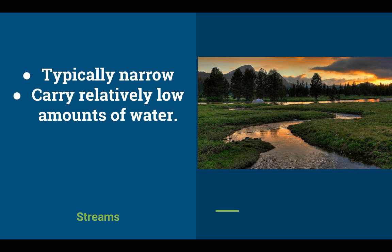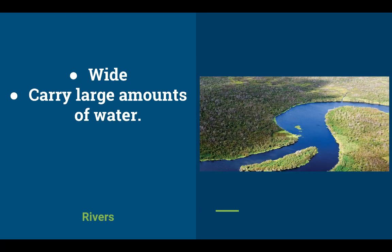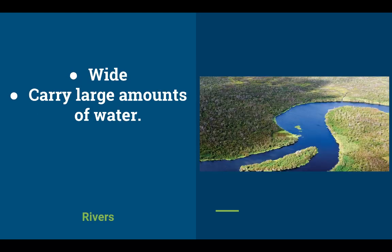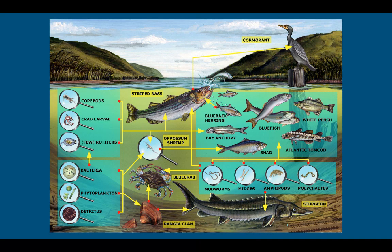Streams are typically narrow and cannot carry lots of water, whereas rivers are wider and carry more water. There's no distinct classification — no clear point when a stream becomes a river. Just know that rivers are much wider and can carry more water. And as the water flow changes, you're going to see biological communities also change.